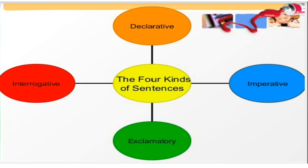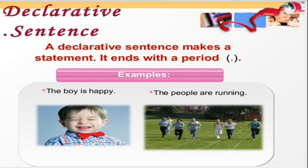Now let us see the four kinds of sentences. Sentences are divided into four major types: the first one is declarative or assertive — a statement; the second one is interrogative; the third one is imperative; and the fourth one is exclamatory.